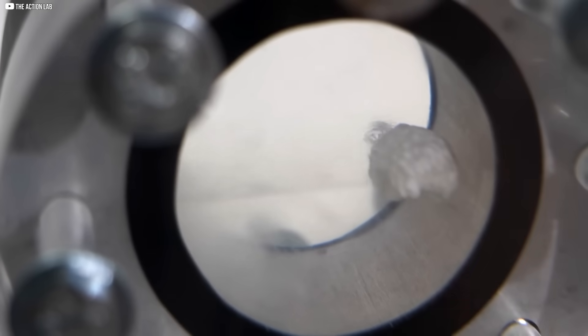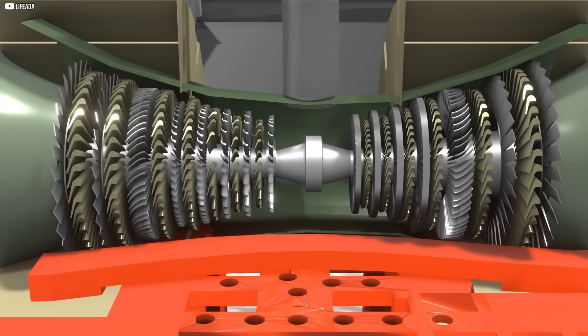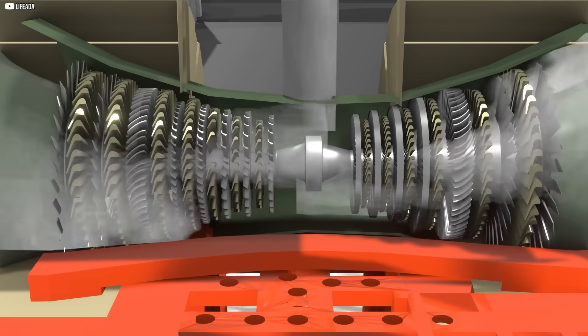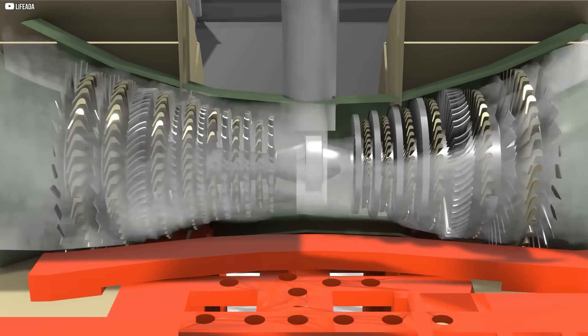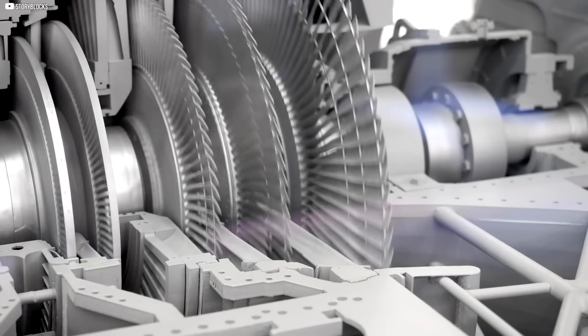Additionally, because the CO2 stays in its supercritical state, it avoids the erosion caused by water droplets in steam turbines, which leads to longer turbine lifespans and less maintenance. This results in more reliable and durable systems.